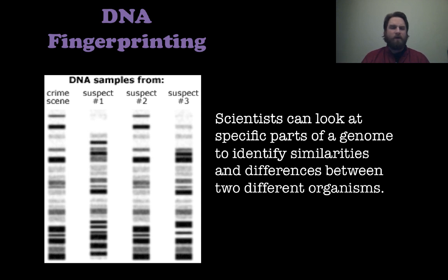A picture of it is actually on the left-hand side. These are DNA samples taken from a crime scene and then three different suspects. So what scientists can do is they can look at specific parts of a genome to identify some similarities and some differences between organisms in order to hopefully maybe get a match if they're looking for it in something like this at a crime scene.